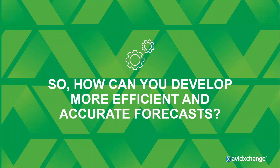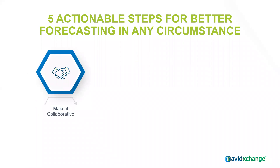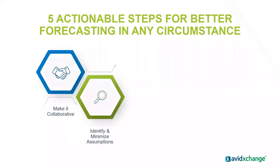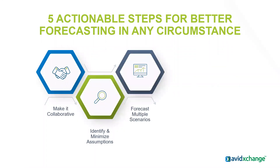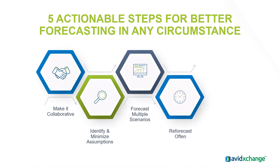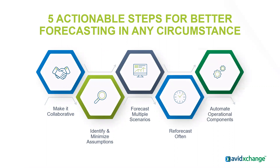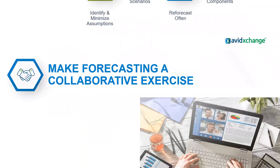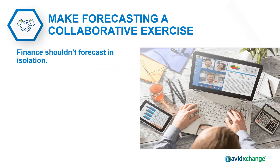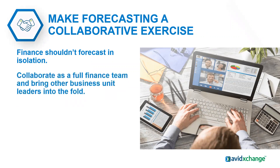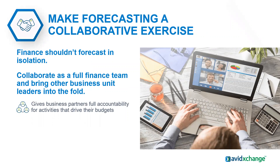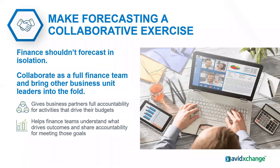So how can we develop more efficient and accurate forecasts? Let's jump into the five actionable steps towards better forecasting. Number one: make it collaborative. You need to involve all the departments that are involved in the forecast — we can't just rely on one. This gives business partners full accountability to drive their budgets and helps finance teams understand what drives the outcome and share accountability for meeting goals.